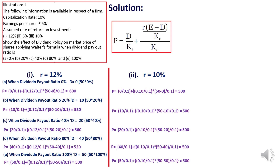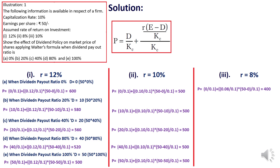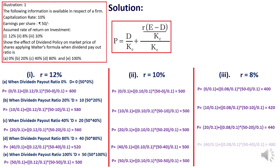The third situation is R equals 8%. When dividend payout ratio is 0%, the value of the firm is 400 rupees. When payout ratio is 20%, the value is 420 rupees. At 40%, the value is 440 rupees. At 80%, the value is 480 rupees. And at 100%, the value is 500 rupees.